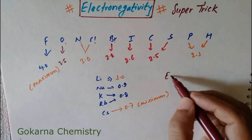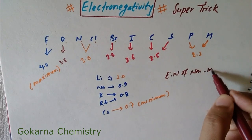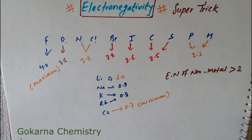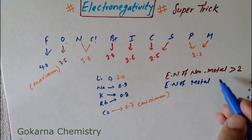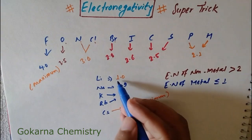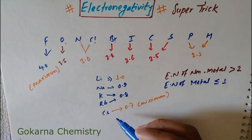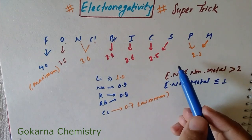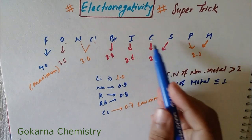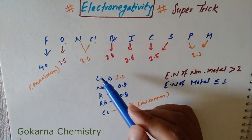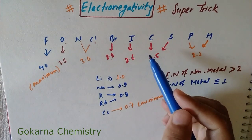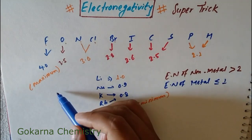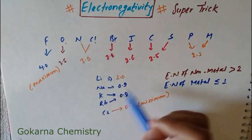Electronegativity of non-metals is greater than 2. Electronegativity of metals is less than or equal to 2. In chemical reactions, electronegativity leads to partial positive and negative charges, which is the basis of the inductive effect — positive inductive effect and negative inductive effect. This is very important and applicable. The next chapter covers polarity and non-polarity.